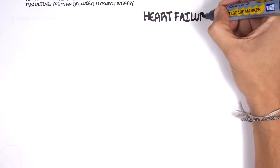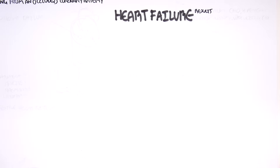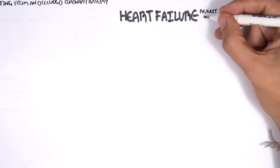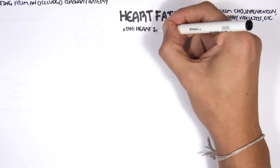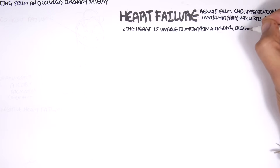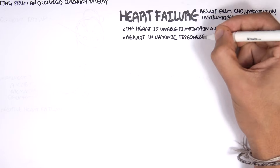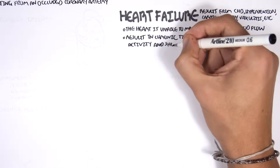The next type of cardiovascular disease is heart failure. Heart failure can result from many heart and body conditions and disorders, such as coronary heart disease, hypertension, cardiomyopathies, and vasculitis, amongst many other things. Heart failure is where the heart is unable to maintain a strong blood flow and pump it around the body, resulting in chronic tiredness, reduced physical activity, and shortness of breath.